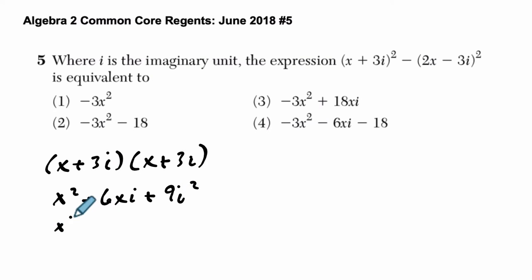That's going to become x squared plus 6xi. And then remember, i is the square root of negative 1. And that also means that i squared, if we square that, square the square root of negative 1, that's just negative 1. So i squared is negative 1, and that means you have negative 1 times 9, so it's minus 9.